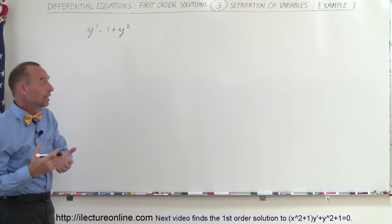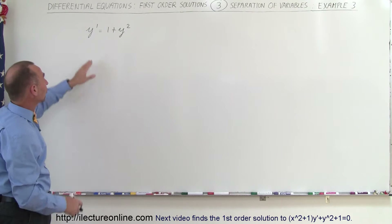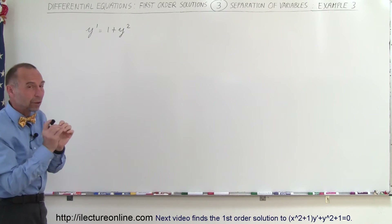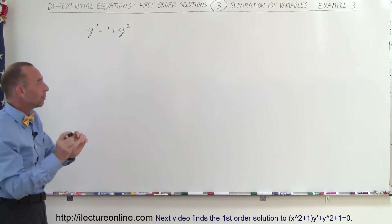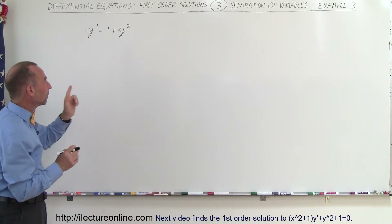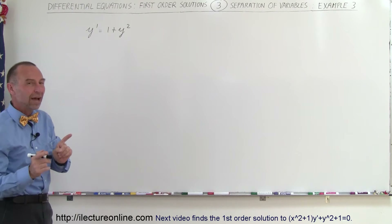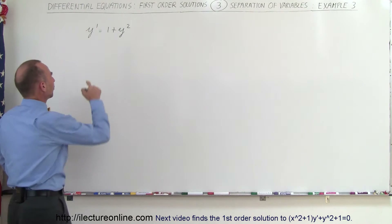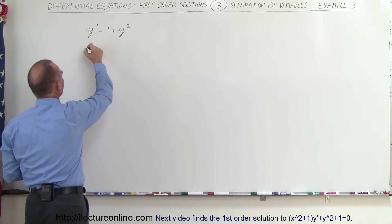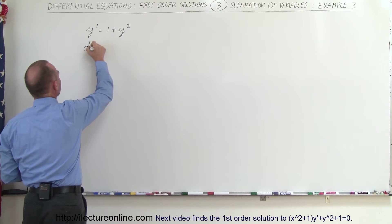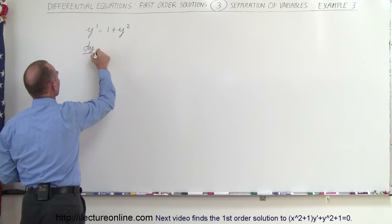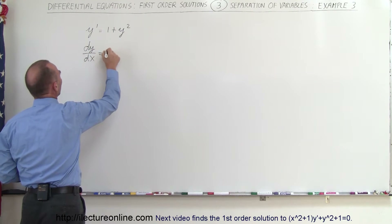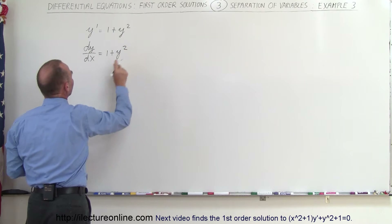We're trying to find the solution to this first-order differential equation. We're again using the separation of variables. First of all, we'll write y prime as dy/dx, which is equal to 1 plus y squared.